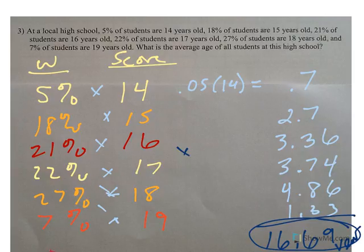So remember, multiply the percent times the category average to get quality points. Add your quality points together, and there is your weighted average.